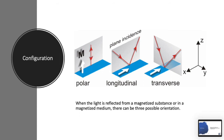In longitudinal Kerr Effect, the magnetic field is parallel to the surface. And in this phenomenon, when the light is incident on the magnetic surface, the light wave that reflects out of the magnetic field becomes elliptic.